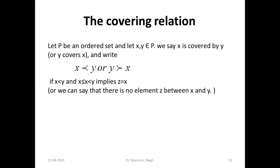In the case of natural numbers under the usual ≤, if I take three and seven, three is less than seven, but between three and seven there are other natural numbers — four, five, six — so we do not say seven covers three. However, six is covered by seven because there is no natural number strictly between six and seven. So the covering relation and comparability are different concepts.